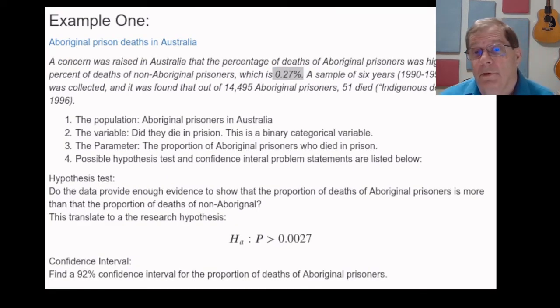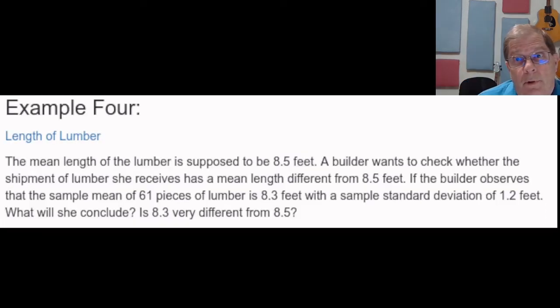And so here, finally, is what a statement of a confidence interval problem would be. Find the 92% confidence interval for the proportion of deaths of Aboriginal prisoners.